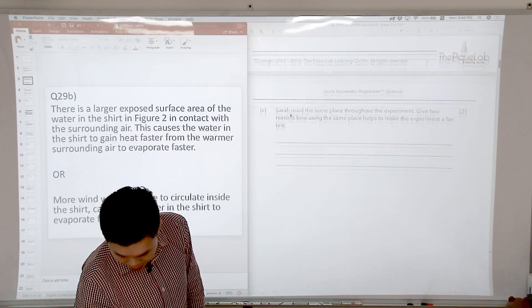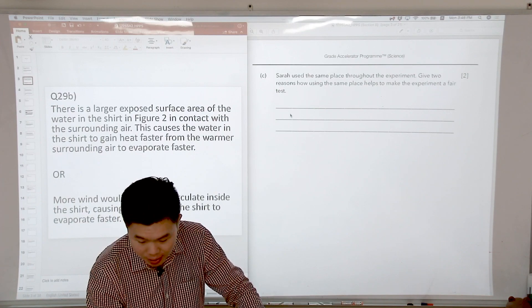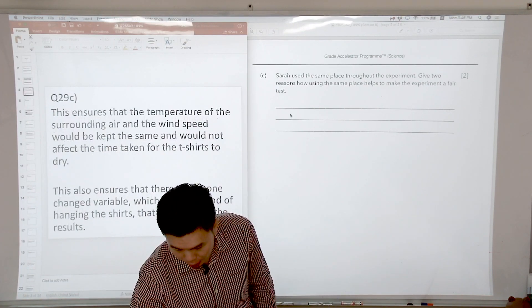So the question here is, by using the same place, what are the two reasons that can help to ensure that this is a fair test? I will use the answer to discuss.